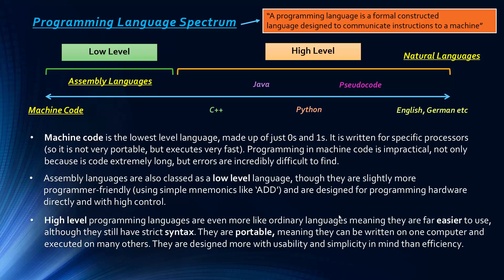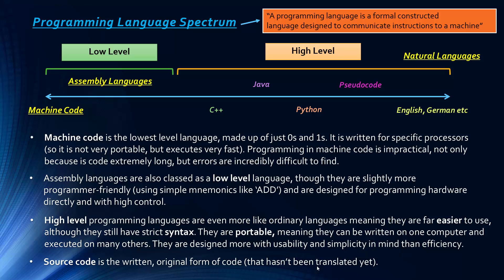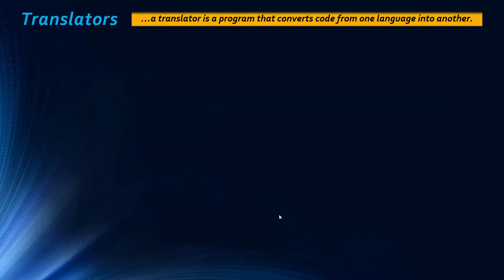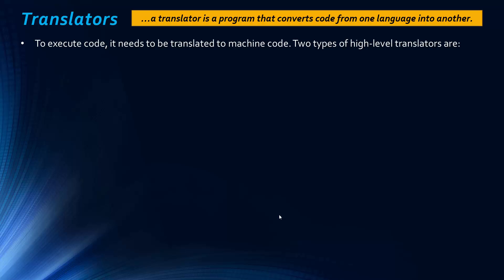High level programming languages are even more like our ordinary languages and far easier to use, although they do have strict syntax. They are more portable — you can write on one computer and execute on many others, but you need to use a translator. They're designed with usability and simplicity in mind rather than efficiency, so they don't execute as fast as machine code. The source code is just the original written code on your screen. A translator is a program that converts code from one language to another, and to execute code it must be translated to machine code.